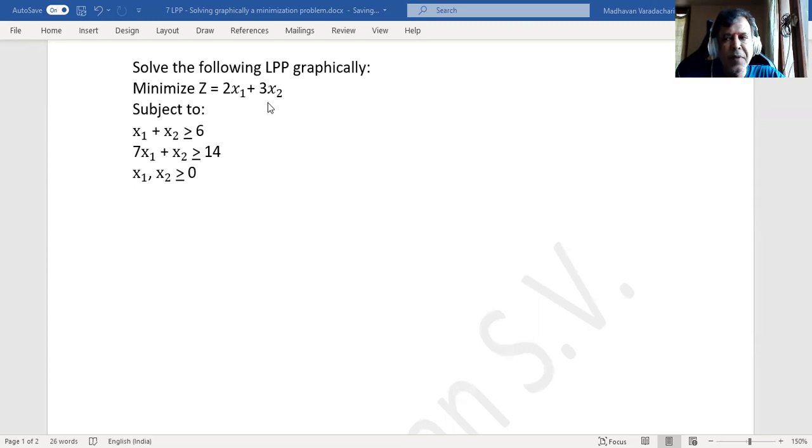Minimize z = 2x₁ + 3x₂ subject to: x₁ + x₂ ≥ 6, 7x₁ + x₂ ≥ 14, and the non-negativity restrictions x₁, x₂ ≥ 0.